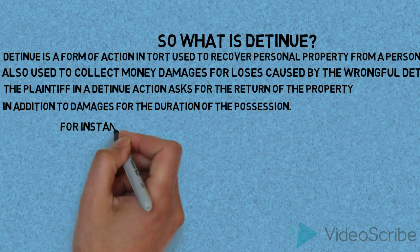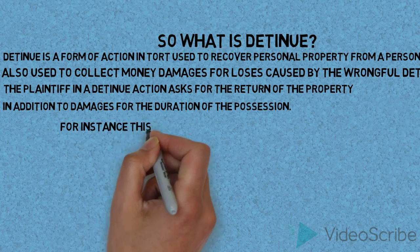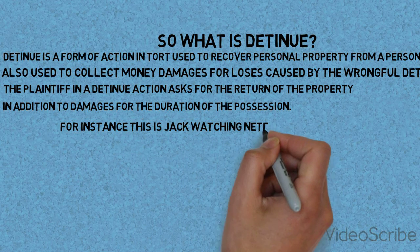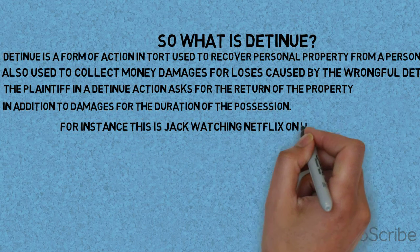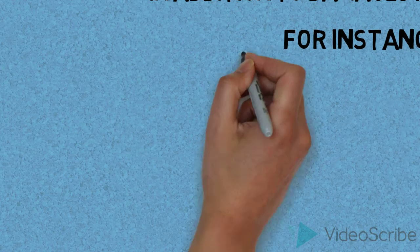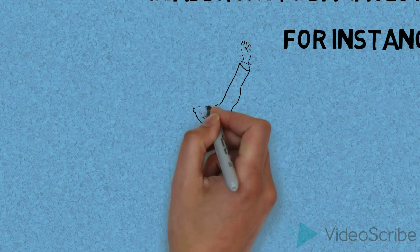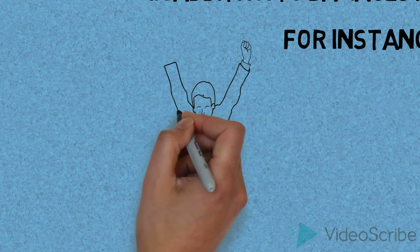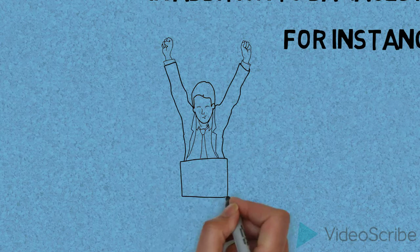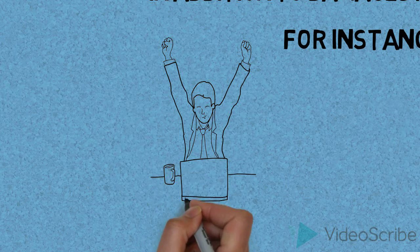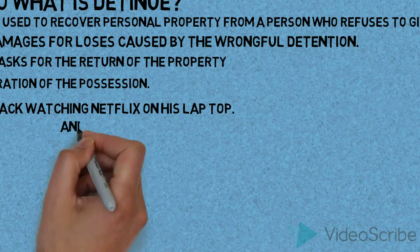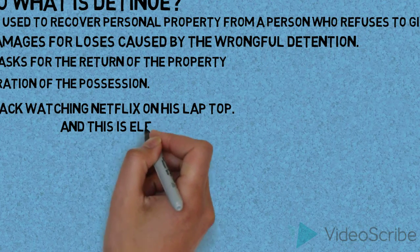For instance, this is Jack watching Netflix on his laptop — the only laptop that he has. And this is Elena, who does not have a laptop.